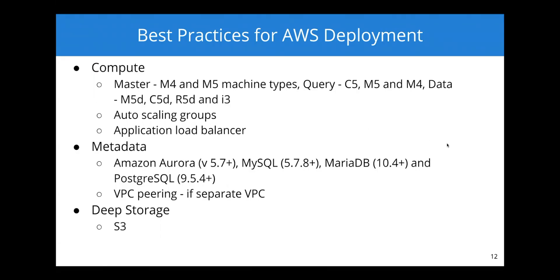I'm going to recommend some of the machine types you would normally want to use when it comes to compute. In AWS, for the master nodes, you can use the general purpose machine types — the M4s and M5s. The M5 also supports NVMe disk, and if you're running Zookeeper inside your master nodes, choose the ones with NVMe disk — local SSDs.